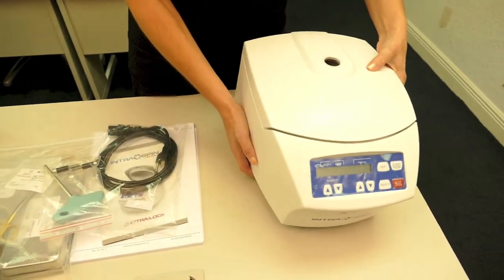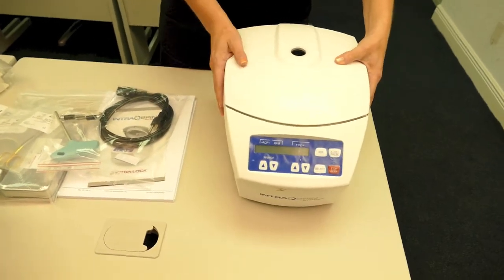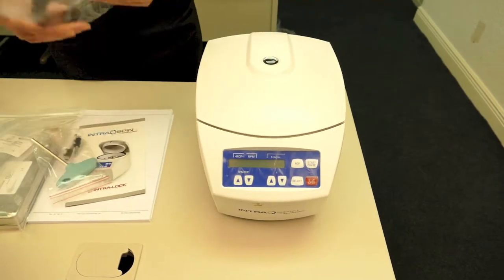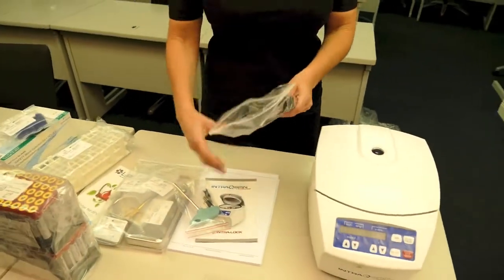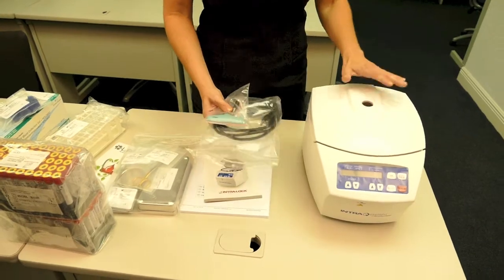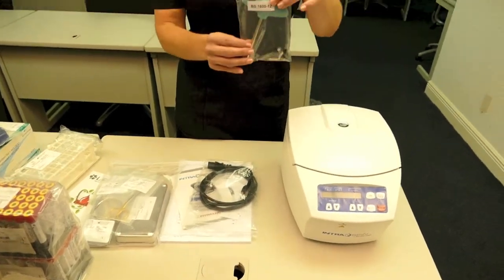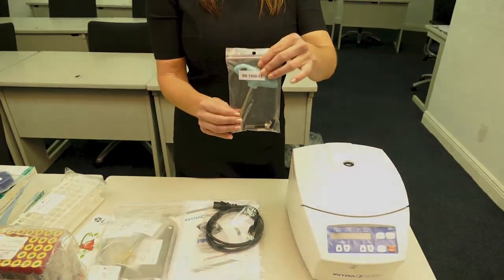Again, you want to be sure to place the centrifuge on a sturdy, flat surface. This is your power cord, centrifuge, again, two fuses, two bolts, and your hand wrench.